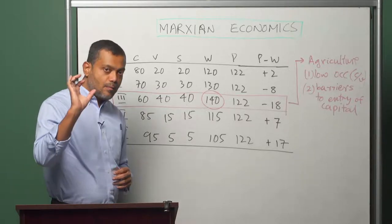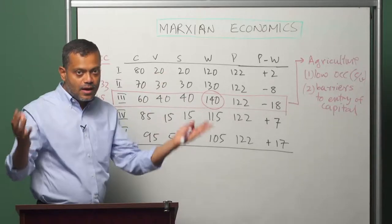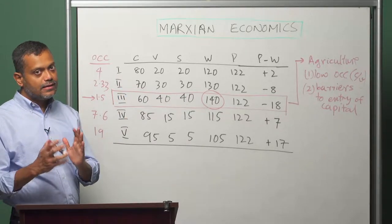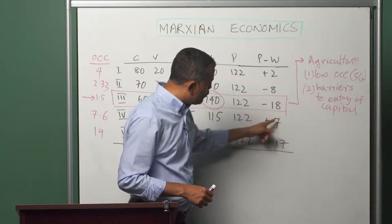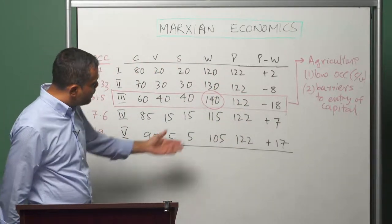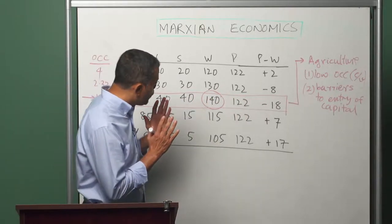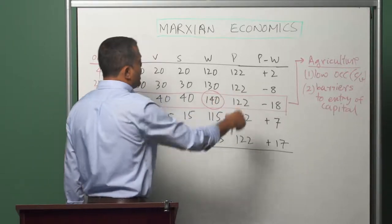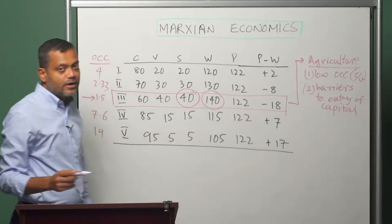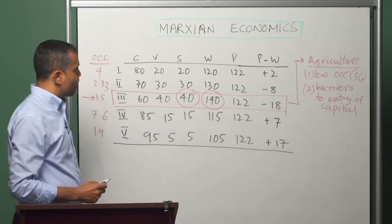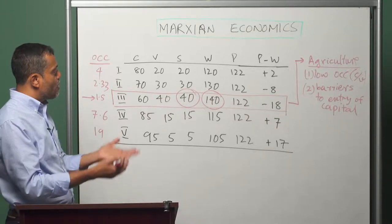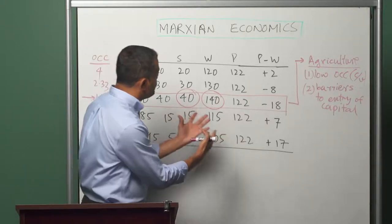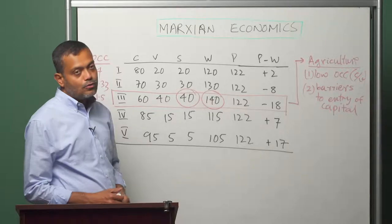Surplus profit is the amount of surplus value in excess of the average rate of profit — the average surplus value generated using the average rate of profit prevailing in the whole economy. In this specific case, the surplus profit is 18 units. If agriculture had these two characteristics, it would realize the total of 40 units of surplus value it generates. Since there is a barrier to entry of capital, it would not participate in the emergence of prices of production, and instead of losing 18 units to the rest of the economy, it would realize the whole 40 units.